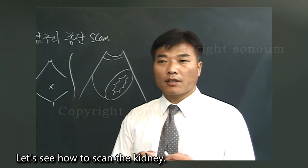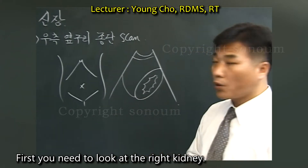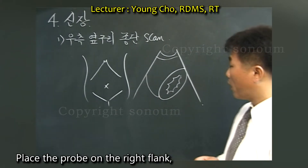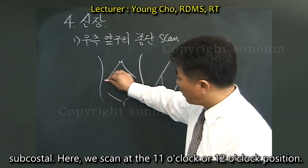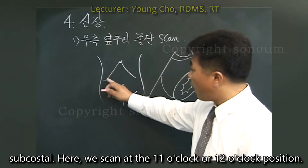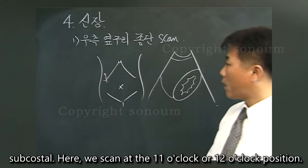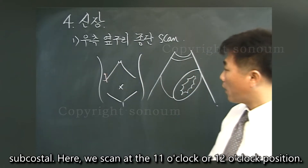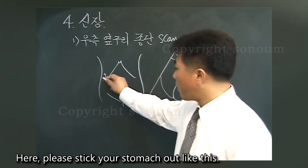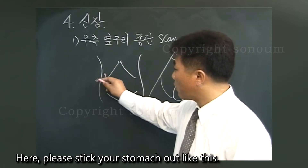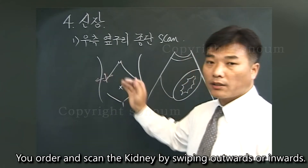Let's see how to scan the kidney. First, you need to look at the right kidney. Place the probe on the right flank subcostal. Here we scan at the 11 o'clock or 12 o'clock position. You order and scan the kidney by swiping outwards or inwards.